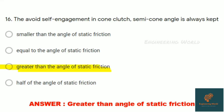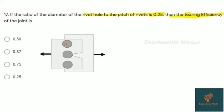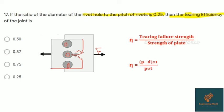Question seventeen: If the ratio of diameter of rivet hole to the pitch of the rivet is 0.25, then tearing efficiency of the joint is... This is the riveted joint with rivets. If applied load is pulling, there is tearing of the plate. Tearing efficiency equals tearing failure strength divided by strength of plate. Tearing failure strength is (P - D) × t × σt, where P is pitch, D is diameter of hole, and t is thickness. After canceling, η equals (P - D)/P. By putting values, we get 0.75.